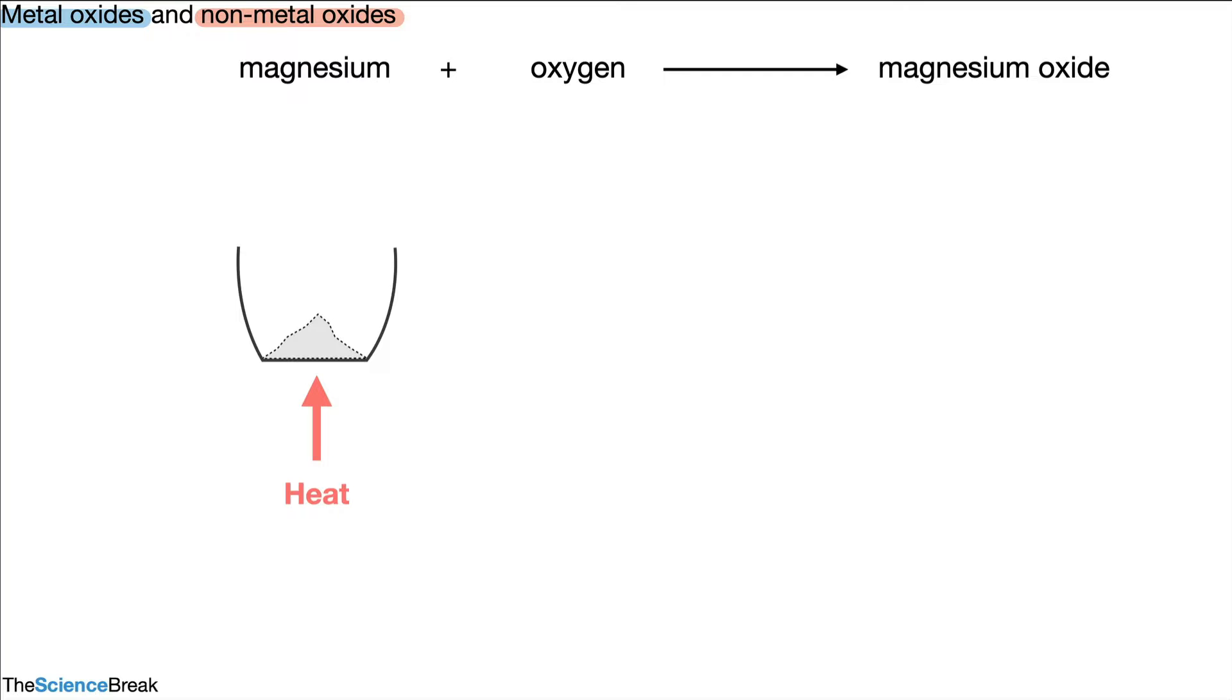Now what's this got to do with alkalis? Well, we can take some water and add the magnesium oxide to water. We get a reaction that produces something called magnesium hydroxide.